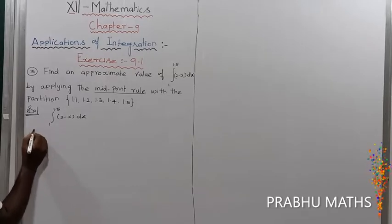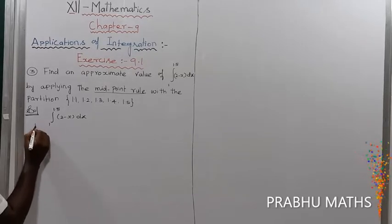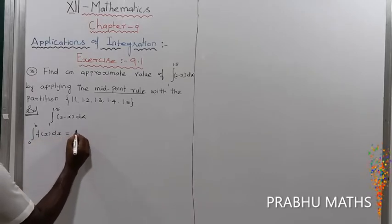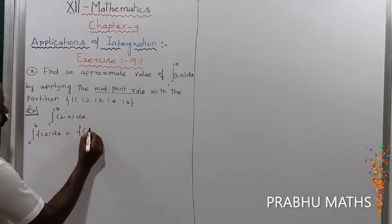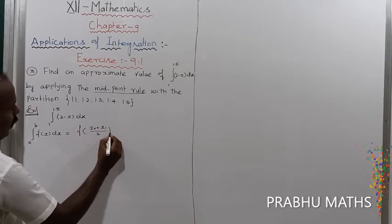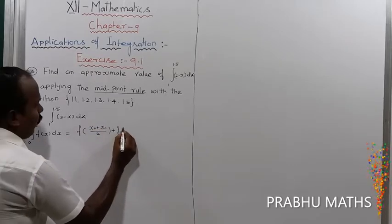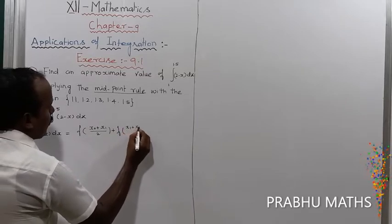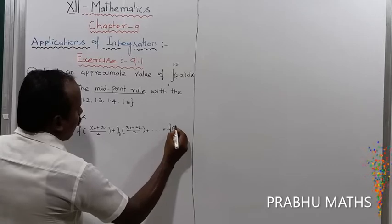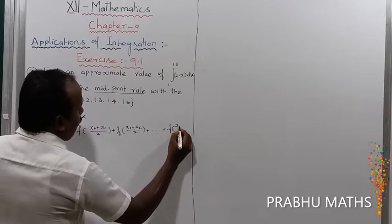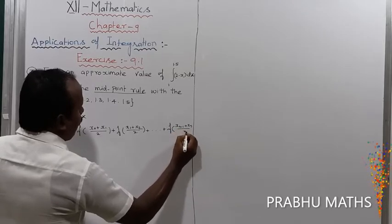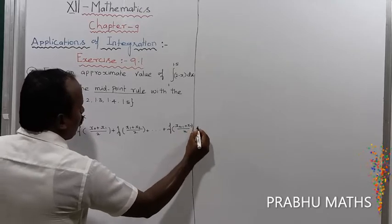So what is the midpoint rule? The integral from a to b of f(x) dx is equal to: f of (x₀ plus x₁) divided by 2, plus f of (x₁ plus x₂) divided by 2, and so on, plus f of (x_{n-1} plus x_n) divided by 2, into delta x. That is the midpoint formula.